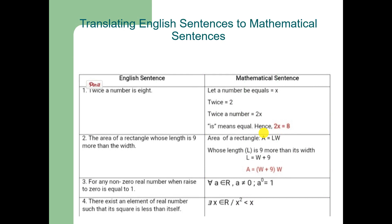Now we are translating English sentences into mathematical sentences. In the previous slide, you saw 'twice a number.' Now we make it a complete sentence: 'twice a number is 8.' Let the number be equal to x. Twice is equal to 2, so twice a number equals 2x, and 'is' means equals. Hence 2x = 8. This is a mathematical sentence.